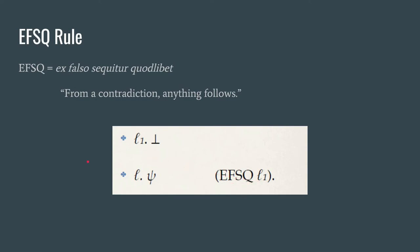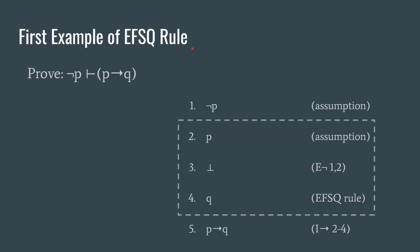Now it's important to point out that ψ is an arbitrary proposition or an arbitrary formula. So again the idea is from a contradiction, from a falsum, anything follows. You can choose anything you would like to follow from a contradiction. That's just what the EFSQ rule allows you to do. Later on we'll talk a little bit about the philosophy behind that.